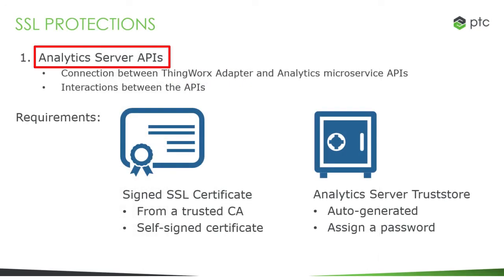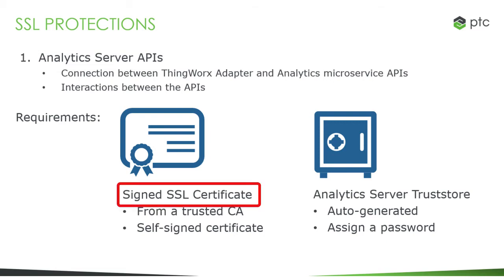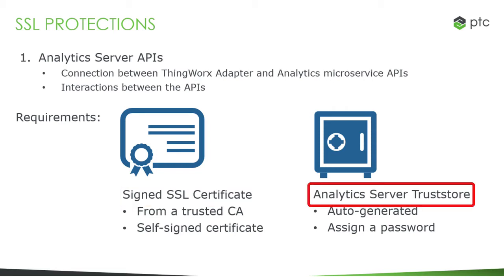First, let's consider access to the internal API layer of the Analytics Server. Implementing SSL here can protect the connections between the ThingWorx adapter and the Analytics Microservice APIs. To enable SSL for the Analytics API layer, you will need a key store with a signed SSL certificate. You can either obtain a certificate from a trusted certificate authority or generate a self-signed certificate. We'll walk through the steps to generate a certificate when we run the installer. The Analytics Trust Store will be generated automatically by the installer, but you will be prompted to provide a password for it. When the Trust Store is generated, the signed certificate is imported into it automatically.